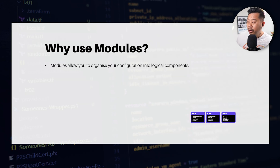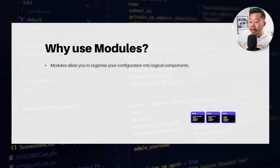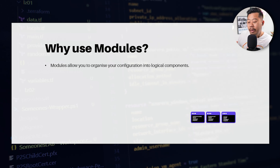So why use modules? Modules allow you to organize your configuration into logical components. An example is the virtual machine module — you could split that up, add other resources such as all the agents you want to deploy, add RBACs and anything else you want with a standard virtual machine deployment, grouping them all together.